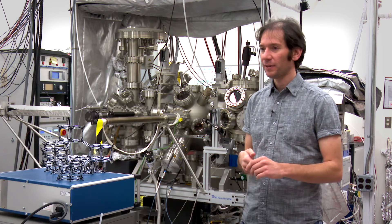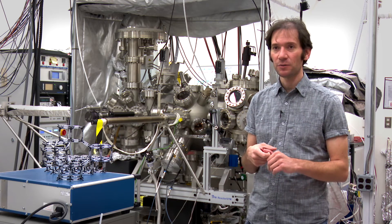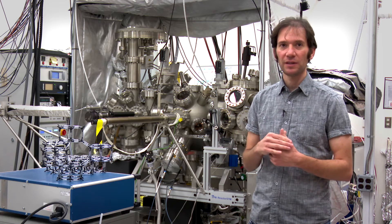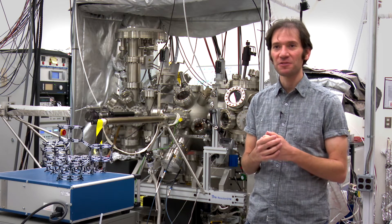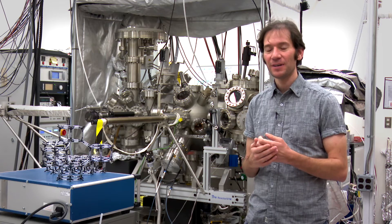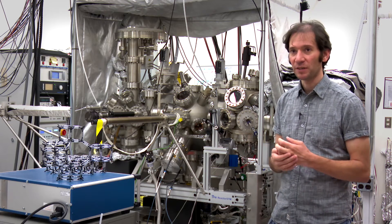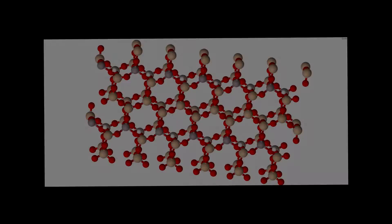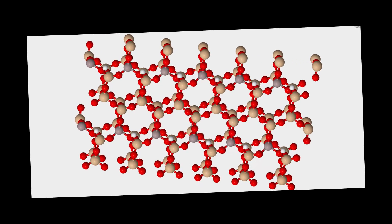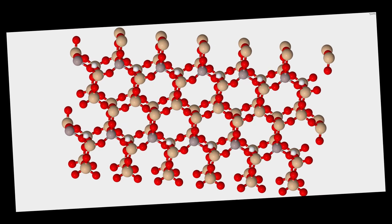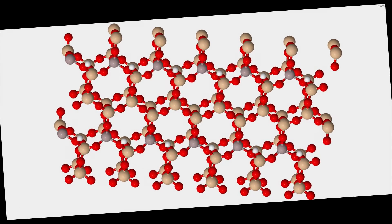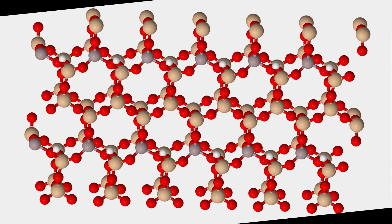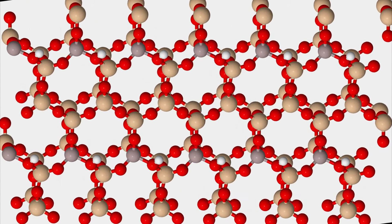And we have a third instrument that is in the lab next door, that is an infrared reflection absorption spectrometer that allows us to follow the molecular vibrations of the adsorbents, including reactants, intermediates, and products on the surface, and that allows us to follow the mechanisms of the reaction.